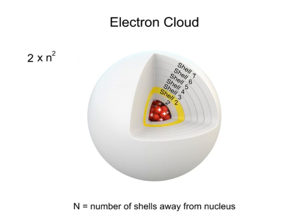For the second shell, it would be 2 times 2 squared, or 2 times 4, to give 8 electrons.